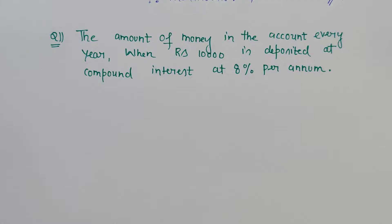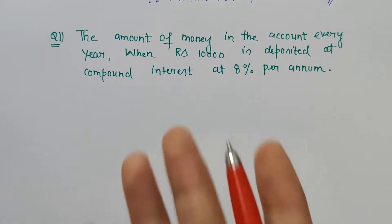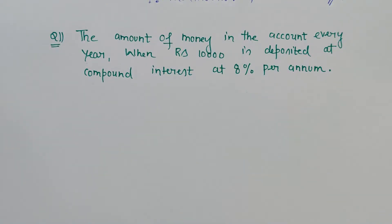already introduced in Class 8 in the simple interest and compound interest chapter. Generally students find it very difficult—how to formulate it mathematically. Now, the principle and rate of interest is given to us. My friends, it's very simple. Here, what is asked? The amount of money in the account, isn't it?